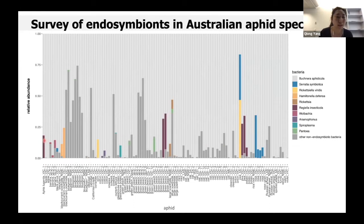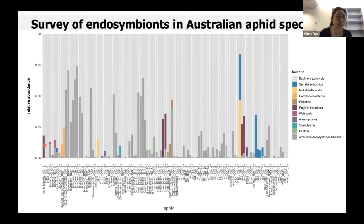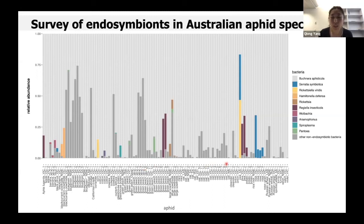There are a couple of surprising findings. Firstly, we found a pretty abundant Regiella infection in a new species called Aphis lugentis — very interesting because it is an ant-attended aphid. Previous literature showed that ant-attended aphids have a very low chance of carrying any secondary endosymbionts, but we did find a very abundant Regiella infection here. The other interesting finding is that no secondary endosymbionts were detected in the three key aphid pests: green peach aphid, oat aphid, and Russian wheat aphid — except for the Regiella infection from the GPA population from Victoria mentioned earlier.